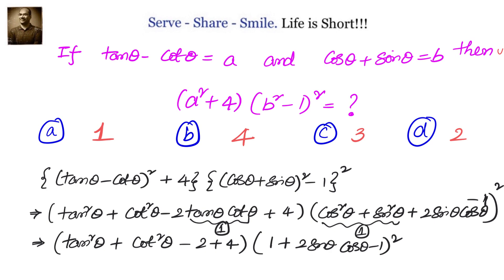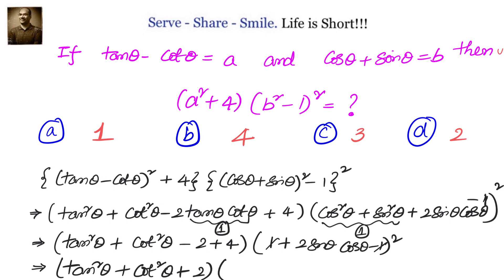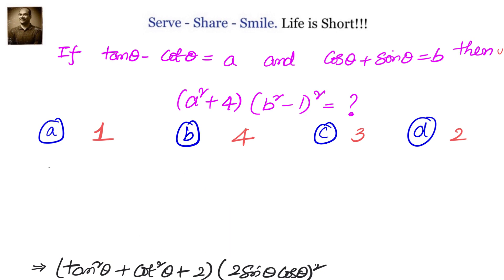Now we simplify: we will have tan²θ plus cot²θ minus 2 plus 4, which is plus 2, and we have 1 and 1 cancel out, so we have 2·sin θ·cos θ. So we have (2·sin θ·cos θ)² whole square.